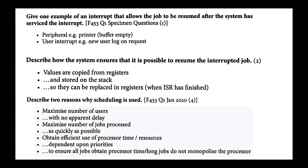Describe two reasons why scheduling is used: maximise number of users with no apparent delay; maximise number of jobs processed as quickly as possible; obtain efficient use of processor time or resources depending upon priorities; to ensure all jobs obtain processor time or longer jobs do not monopolise the processor. The two main ones are: 'maximise number of users with no apparent delay', and 'obtain efficient use of processor time depending on priorities'.